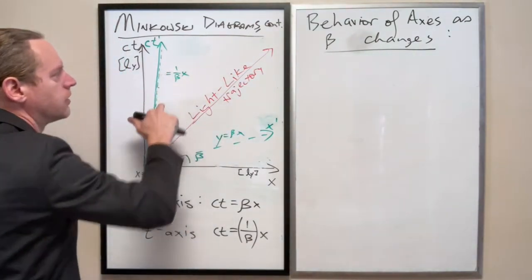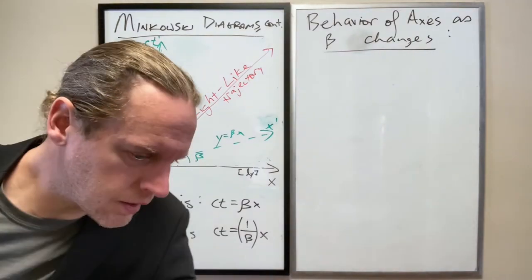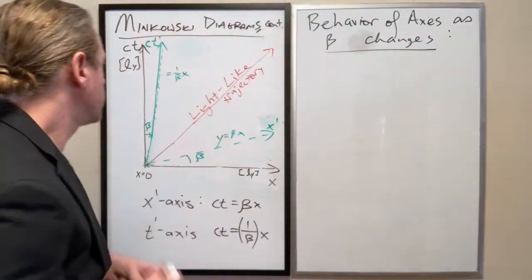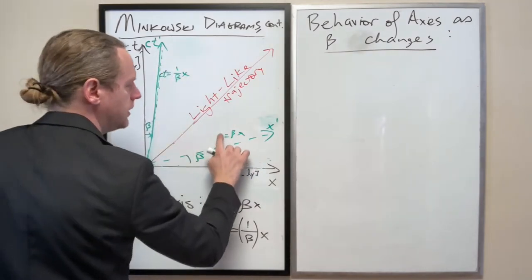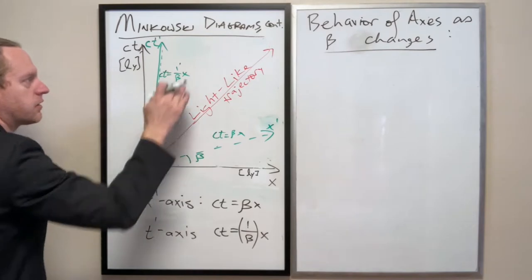And I should write that here. That would be ct equals x, specifically, and ct equals beta x, 1 over beta x.